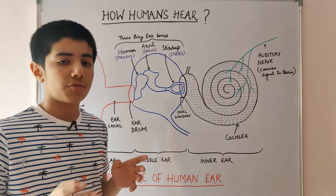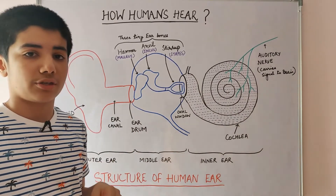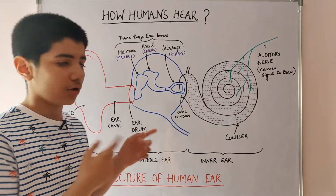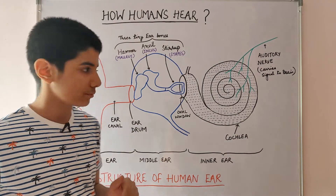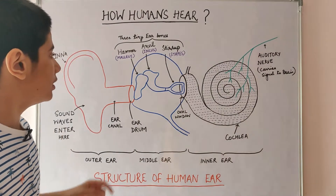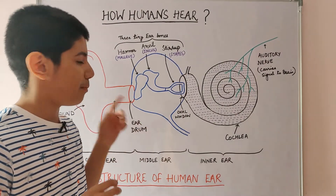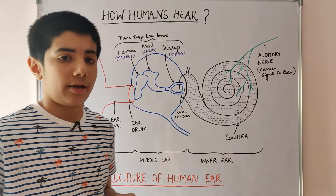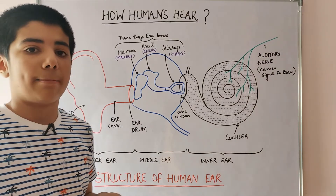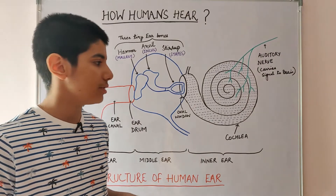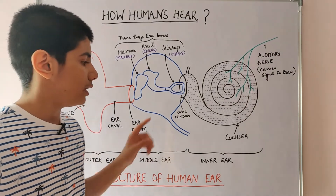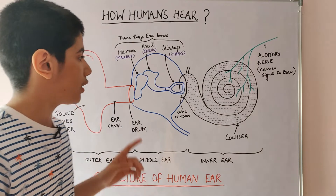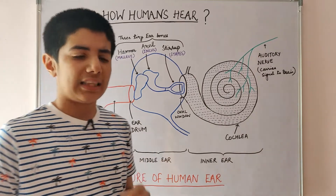The three bones amplify the sound vibrations before sending them to the cochlea. The stirrup hits the membrane of the oval window and passes the amplified vibrations to the liquid of the cochlea. The liquid of the cochlea begins to vibrate.